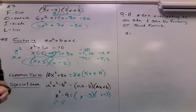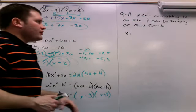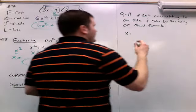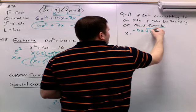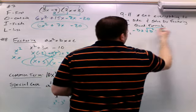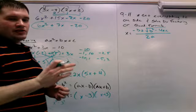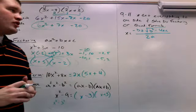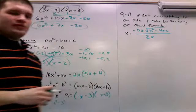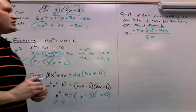Now the next part of the review is problems 9 through 11. These are all worked the same way: get everything to one side, then solve by factoring or using the quadratic formula. Remember, the quadratic formula is x equals negative b plus or minus the square root of b squared minus 4ac, all over 2a. You can use the quadratic formula every time for 9 through 11, but I'm going to use factoring because I think it's easier.